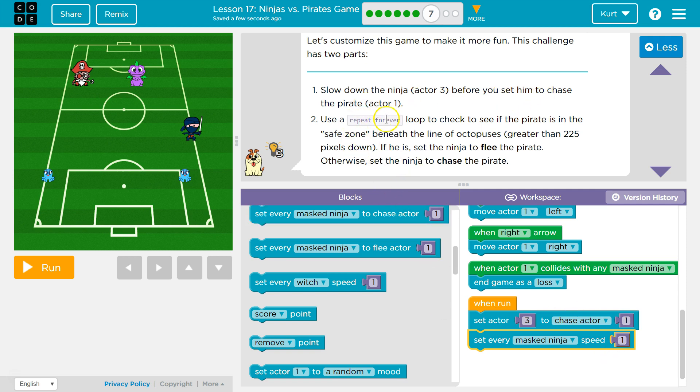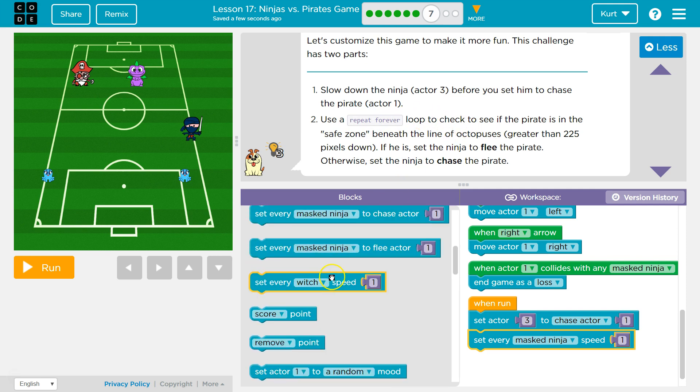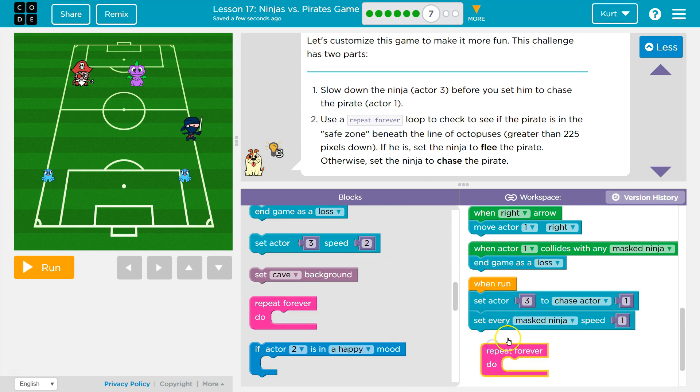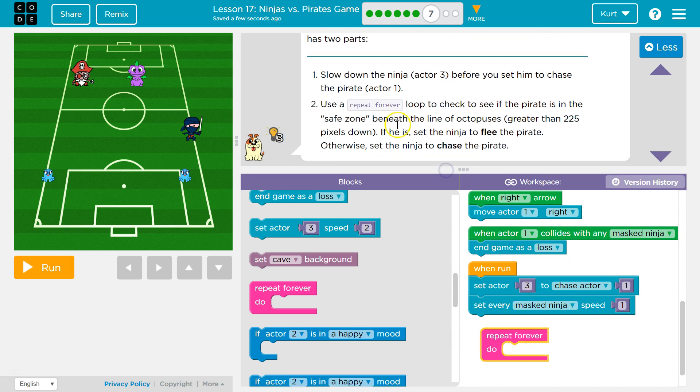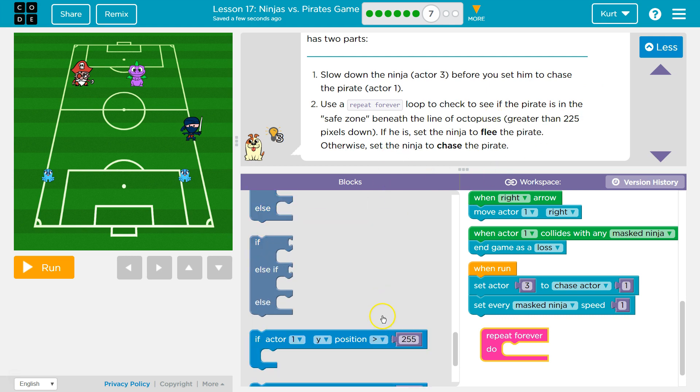Use the repeat forever loop. Now we need that pink loop thing. And remember, anything that goes inside of this actually repeats forever. So the code runs over and over and over. So to check to see, we're going to use an if statement. This is complicated. So we're going to see if the pirate is beneath the line of octopus.